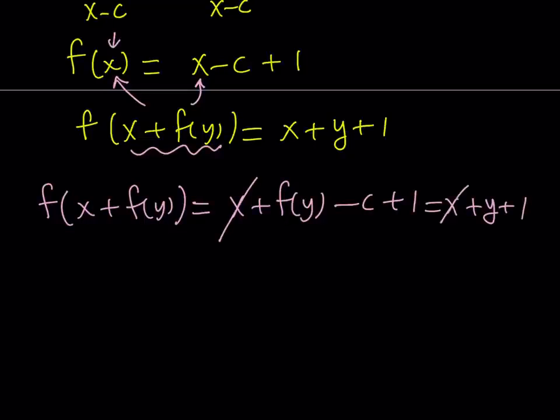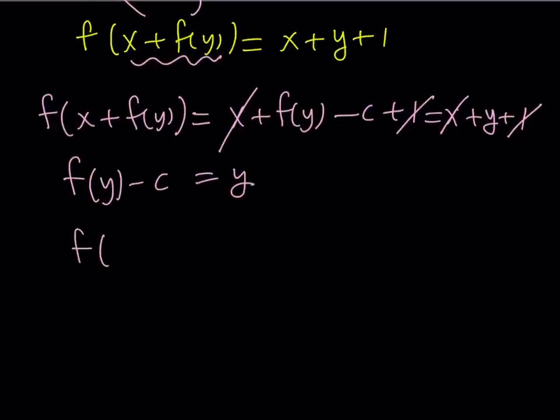From here, x cancels out, leaving us with, and the 1 cancels out. So that leaves us with f of y minus c equals y. And then we can just add c to both sides. And that's going to give me, or us, f of y equals y plus c. Great.